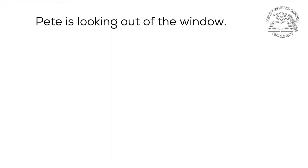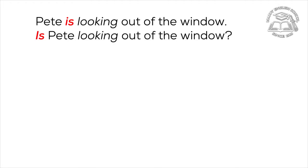To make yes-no questions, you need to take an auxiliary verb and put it in front of the subject. Let's look. 'Pete is looking out of the window.' — 'Is looking' — 'is' is an auxiliary verb. So: 'Is Pete looking out of the window?'